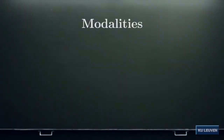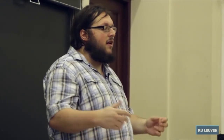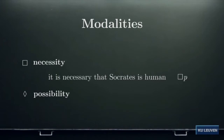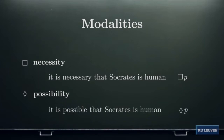Modal logic introduces two modal operators: the box operator and the diamond operator. The box operator stands for necessity; the diamond operator stands for possibility. There are also other interpretations — for example, box could stand for obligation and diamond for permission — but we won't discuss those. So a sentence like 'It is necessary that Socrates is human' is formalized as box P, and 'It is possible that Socrates is human' as diamond P.